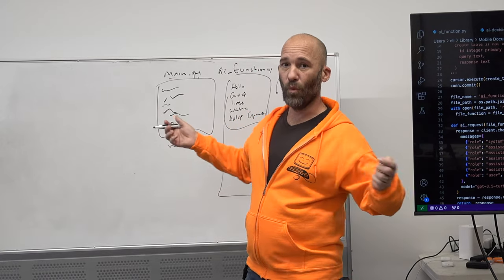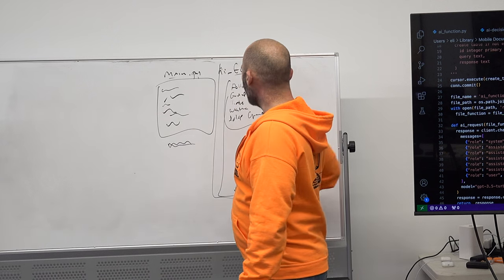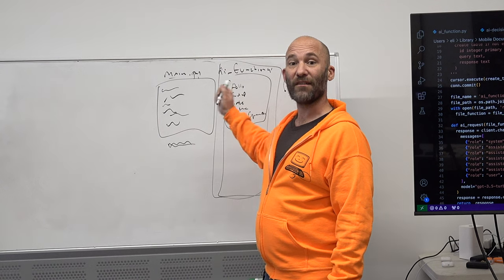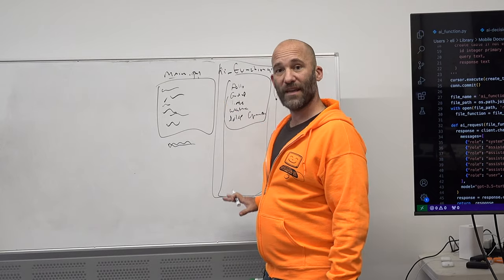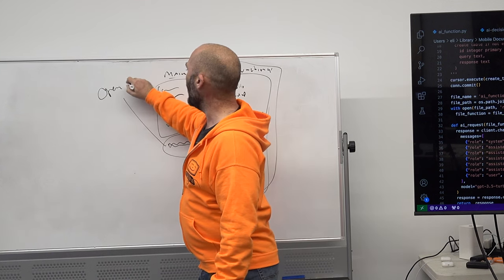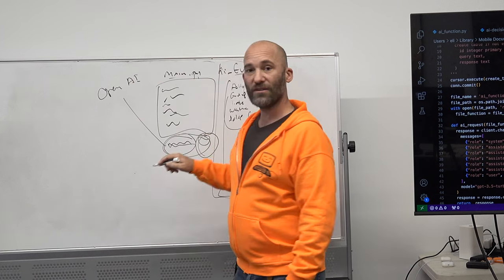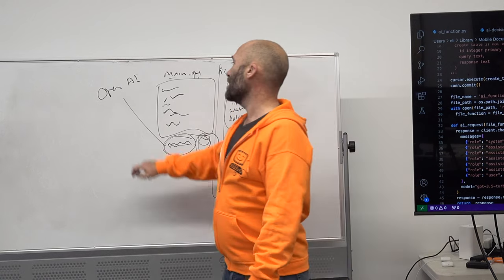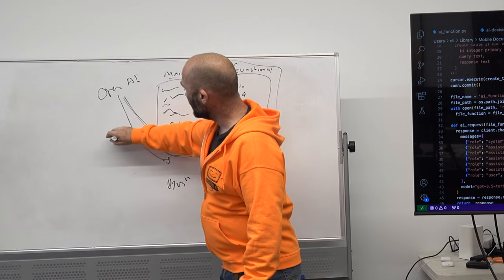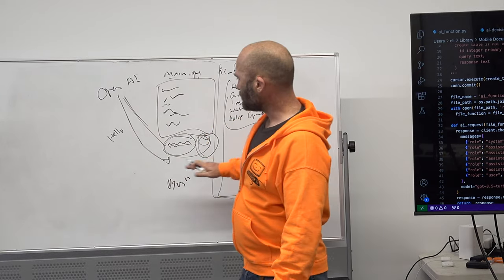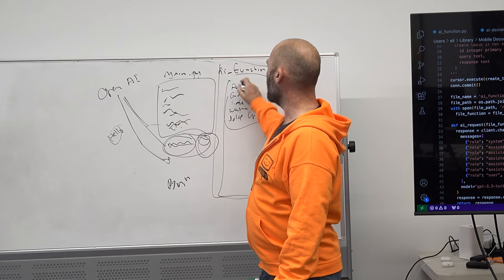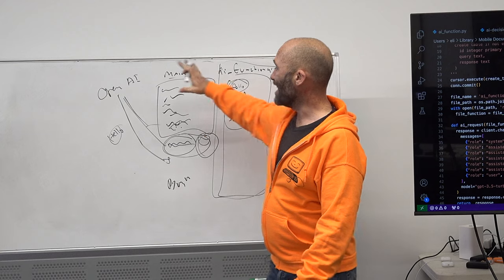That query, along with your entire functions file, gets sent up to OpenAI. You actually read the entire functions file into a variable. We say: this is the person's query, this is the functions we have — what function are these people looking for? So if I say 'bonjour,' we send bonjour up with all the functions and OpenAI returns 'this person is asking for hello.' There's an if-else statement in the main Python script that will then trigger the hello function in the functions file. That's the basic system.